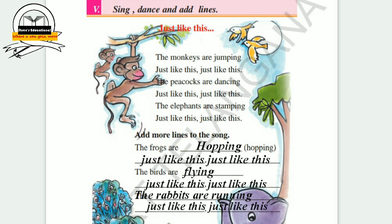In the fifth bit, sing, dance, and add lines. You have to fill in the blanks and sing and dance for this poem: The monkeys are jumping just like this, just like this. The peacocks are dancing just like this, just like this. The elephants are stomping just like this, just like this. Add more lines such as: The frogs are hopping just like this. The birds are flying just like this. The rabbits are running just like this.